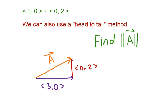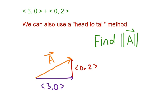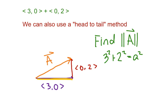We're also going to use the resultant vector to find what's called the magnitude of vector A. That symbol means the magnitude of vector A — find the length: how long is this vector? To find the magnitude, we use the Pythagorean theorem. The head-to-tail setup creates a 90-degree angle, so we use that for our right triangle. This side is a leg of length 3, so we get 3 squared, and the other leg has length 2, so we square that.